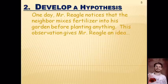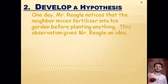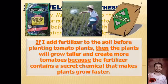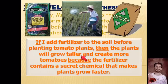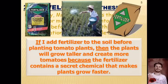My neighbor's garden is better — it has more tomatoes and taller plants — so I'm going to try to explain why those observations exist. One day I noticed my neighbor sneak out and mix fertilizer into the garden. Maybe it's the fertilizer causing his plants to grow better. So I come up with a hypothesis: if I add fertilizer to my soil before planting the tomato plants, then I believe my plants will grow taller and make more tomatoes because fertilizer contains a secret chemical that makes plants grow faster. In elementary school, you probably learned a hypothesis should be written as an if-then statement — if I do this, then this will happen.